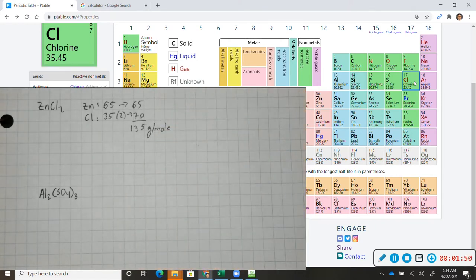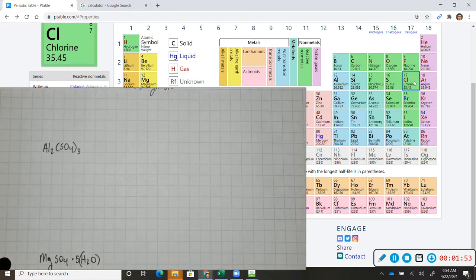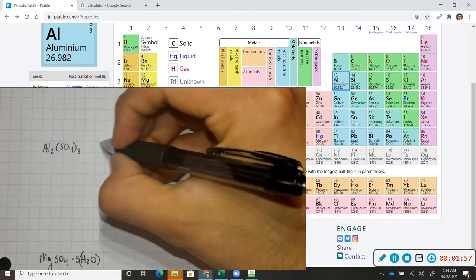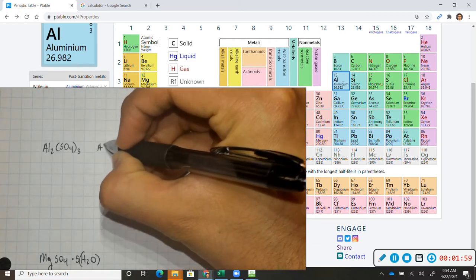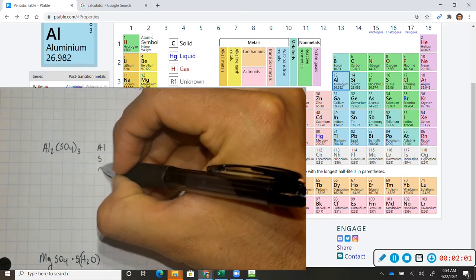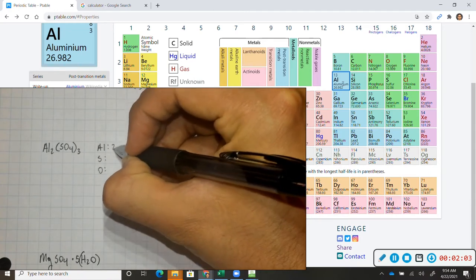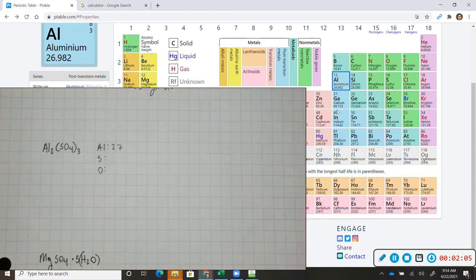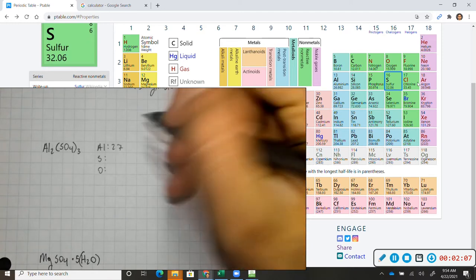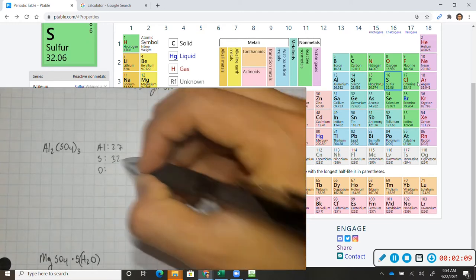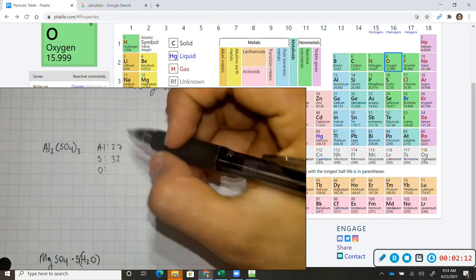So now for the second problem, we have aluminum sulfate, and if we look at the periodic table, aluminum has a mass of 26.9, so that rounds to 27. Sulfur has a mass of 32.06, which is 32. Oxygen has a mass that rounds to 16.